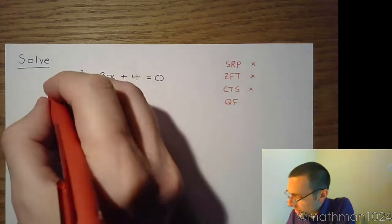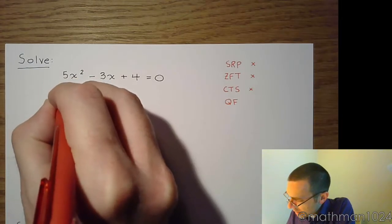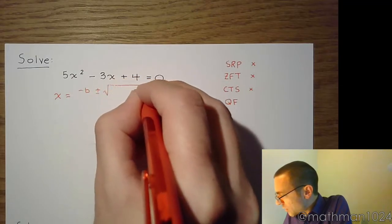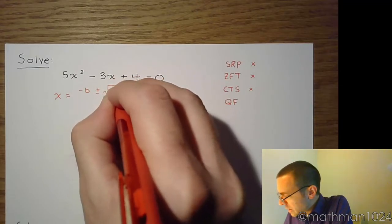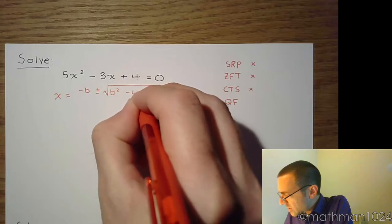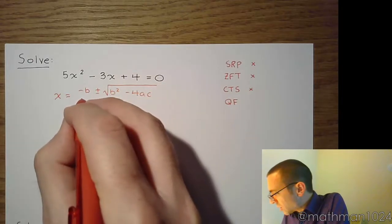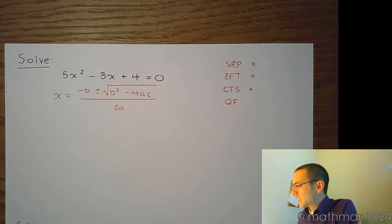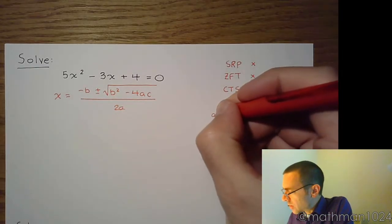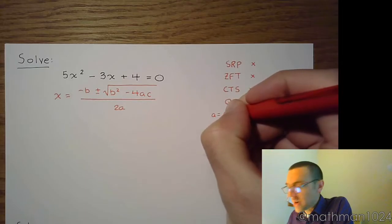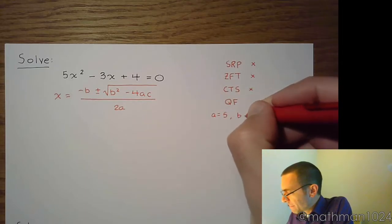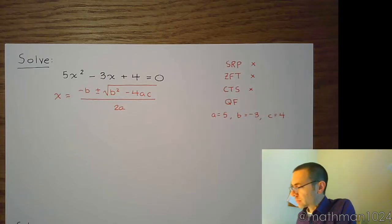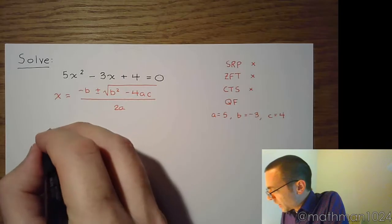Okay, so remember, the quadratic formula is x equals negative b plus or minus the square root of b squared minus 4ac, all of this is divided by 2a. So make sure that you correctly identify your a, b, and c. So here, a is 5, b is negative 3, and c is 4. All right, so let's plug that into the formula and see what we get.